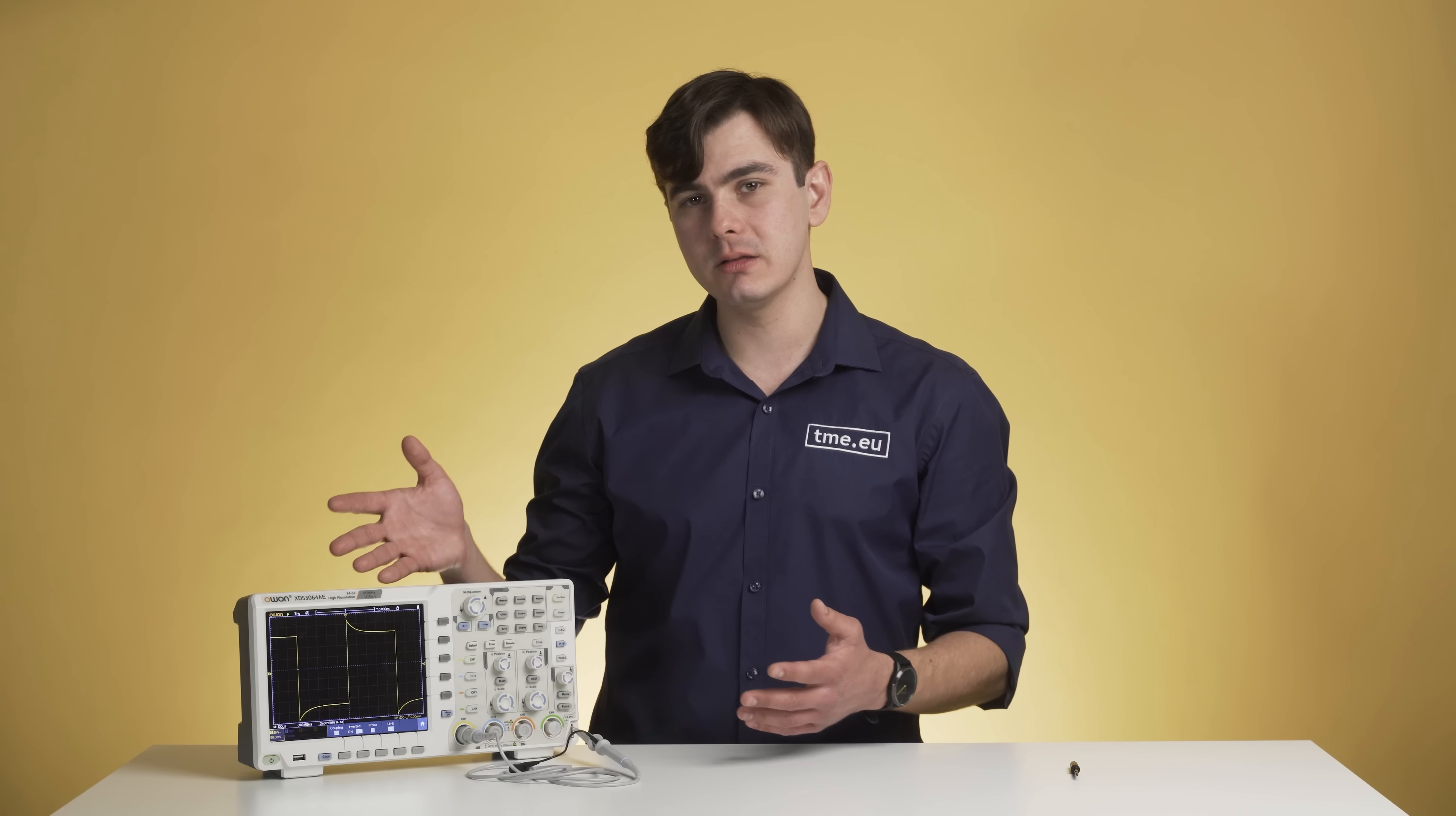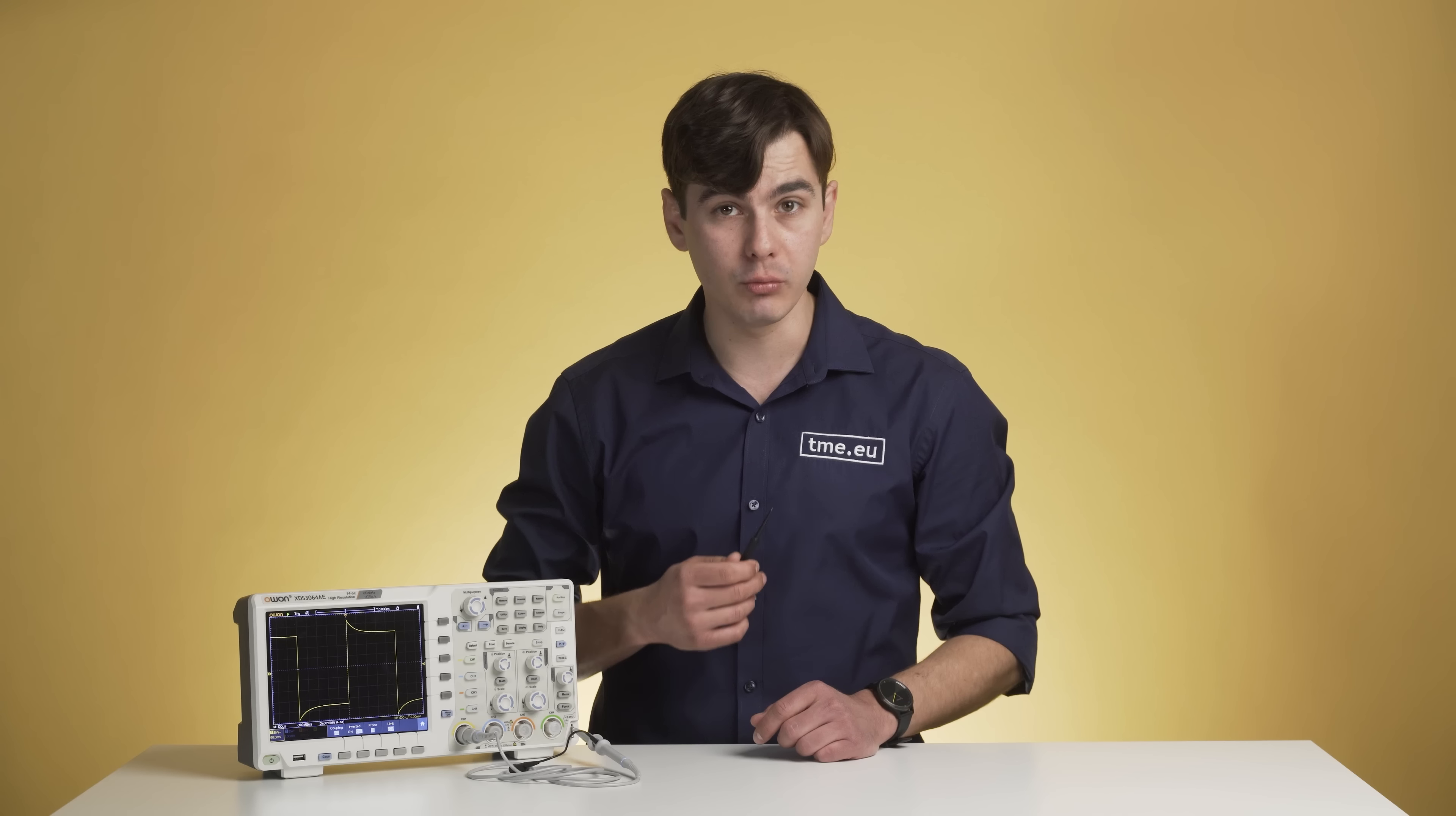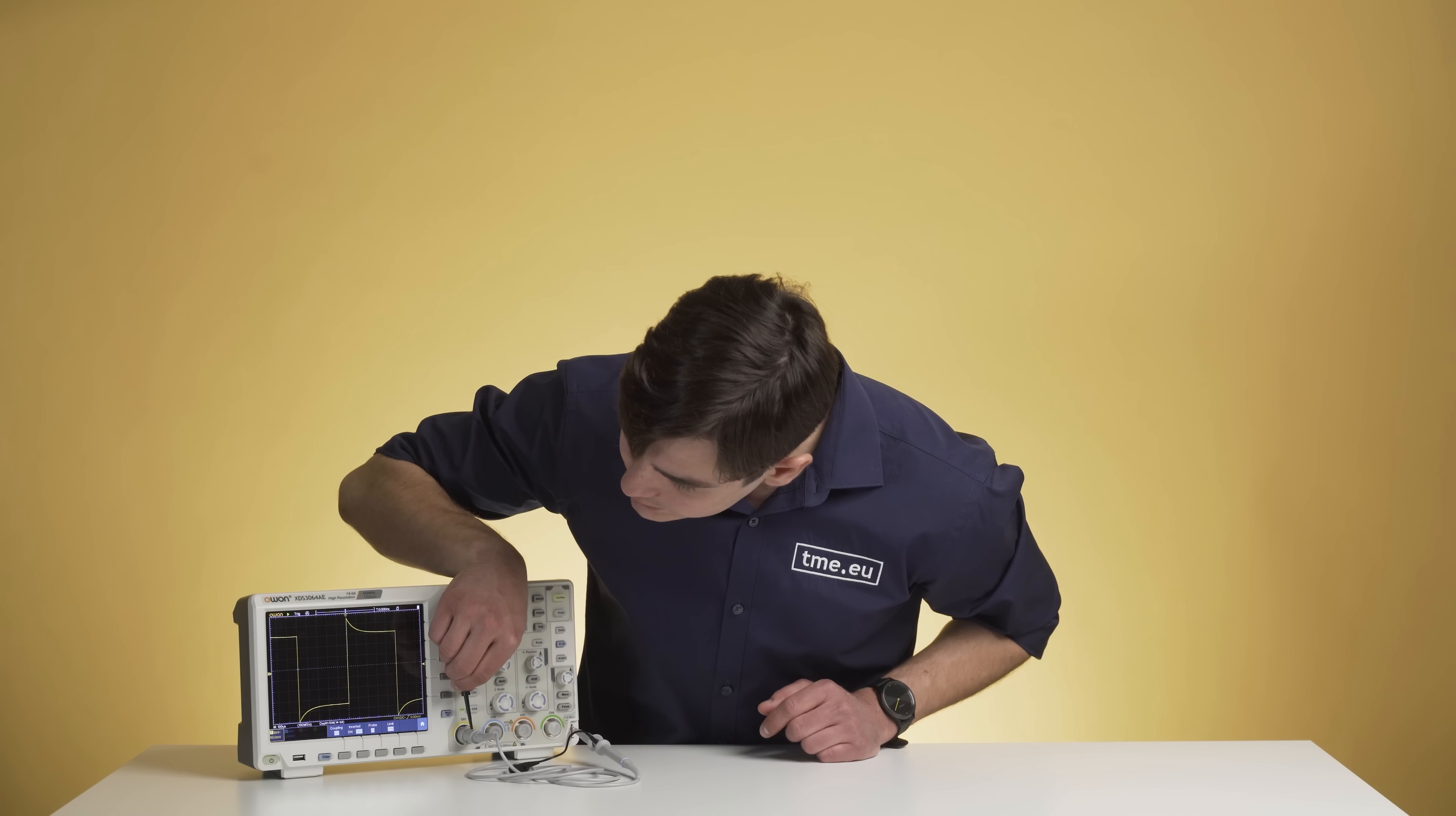If you get some wacky distorted square signals like here, use the provided screwdriver that comes with the probes. Stick it here and adjust it until it looks squarely enough.